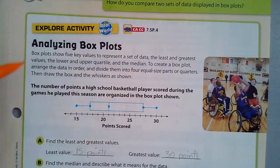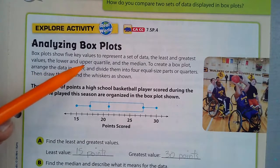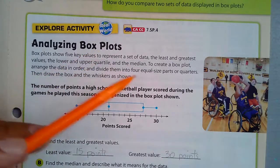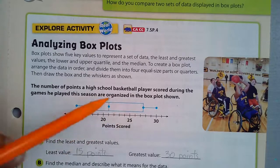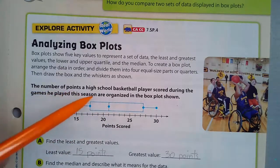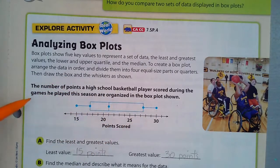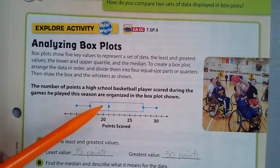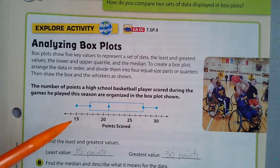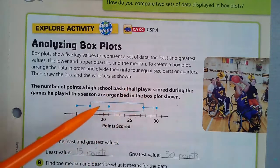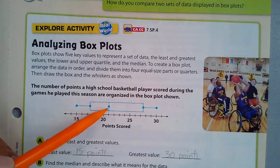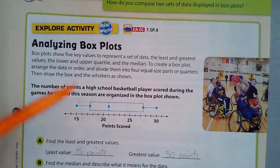To create a box plot, arrange the data in order and divide them into four equal size parts. The number of points a high school basketball player scored during the games he played this season are organized in the box plot shown. The least amount of points he scored in a game was 15, the most was 30, and the median was 21.